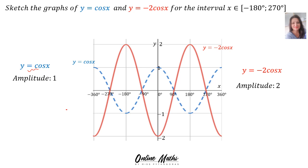We have a problem in this one since the interval was from x is an element of minus 180 up to 270. So go back to your graphs and erase everything that's outside of that interval. For the red graph, this is the part that you will erase. For y = cos x, the blue graph, this is the part that you will erase. Make sure your graph starts at minus 180 and goes up to 270. Therefore, erase the corresponding parts for both graphs. Remember, on the red graph y = minus 2 cos x, the amplitude is positive 2.